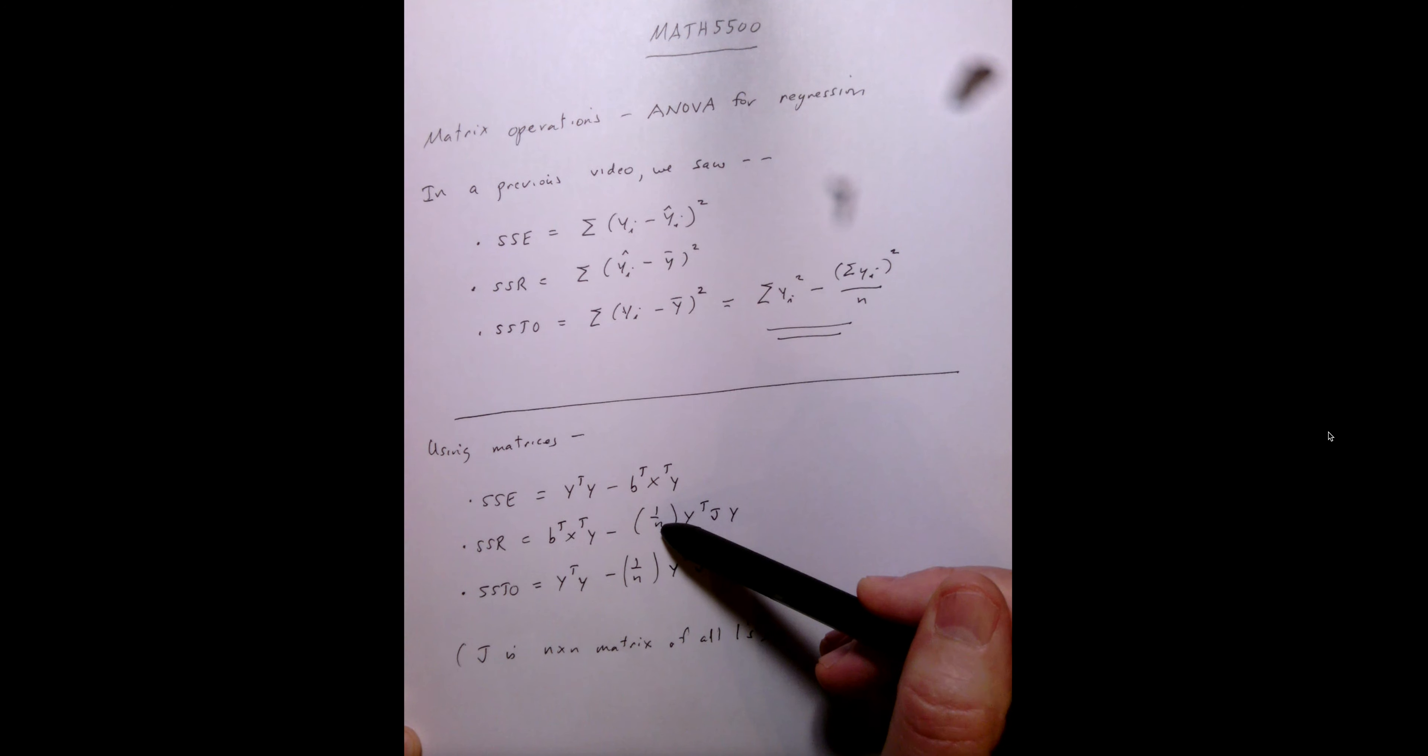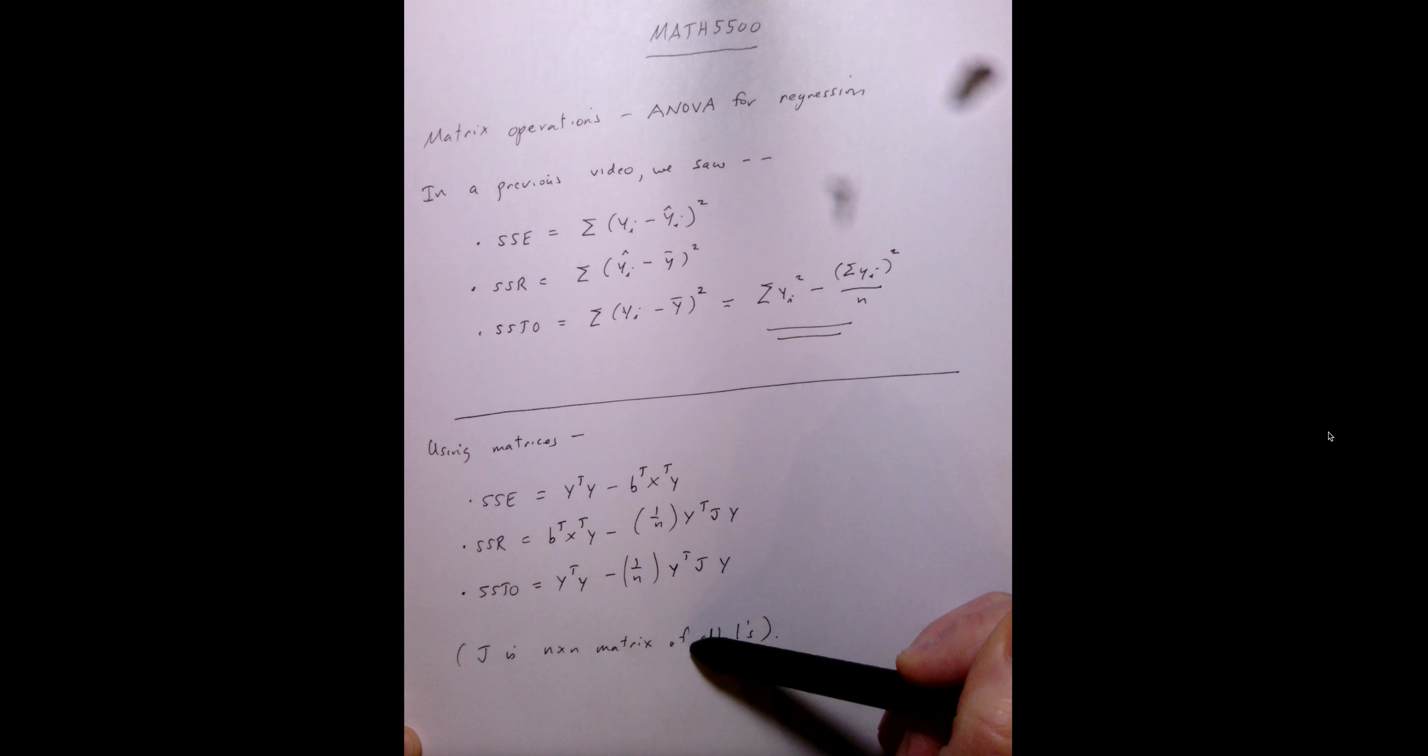Nothing really new here. The only thing new you're going to see is this J matrix that we use for the calculation of ANOVA with matrices. And a J matrix is just an n-by-n matrix of all ones. So if we have, for example, n is equal to 2, we're going to have a 2-by-2 matrix just be all ones.